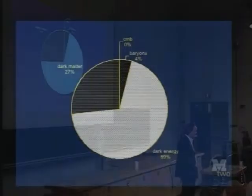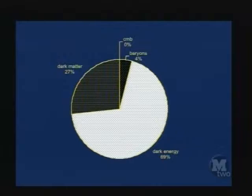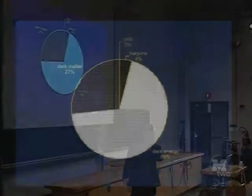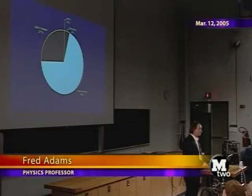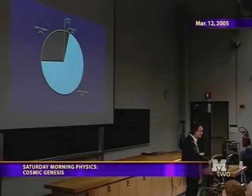A pie chart shows the relative fractions: the matter is broken up into dark matter and baryons — protons and neutrons — while the microwave background is about one part in 10⁴ of the energy budget. So we have a very good handle on the current inventory of our universe, and that leads us to the fate of the universe.